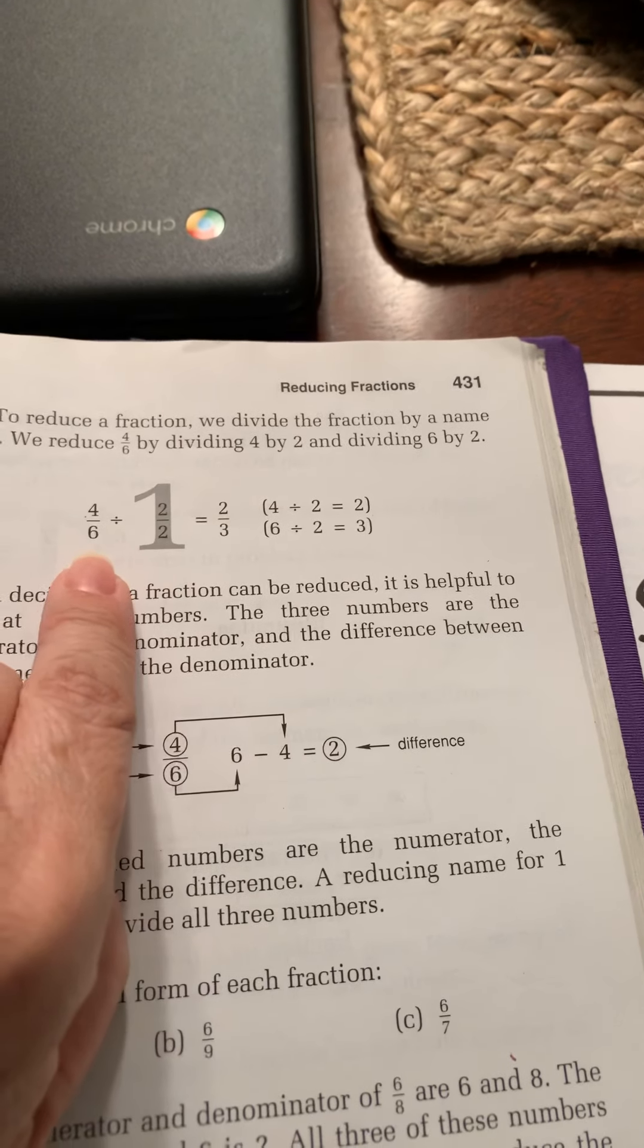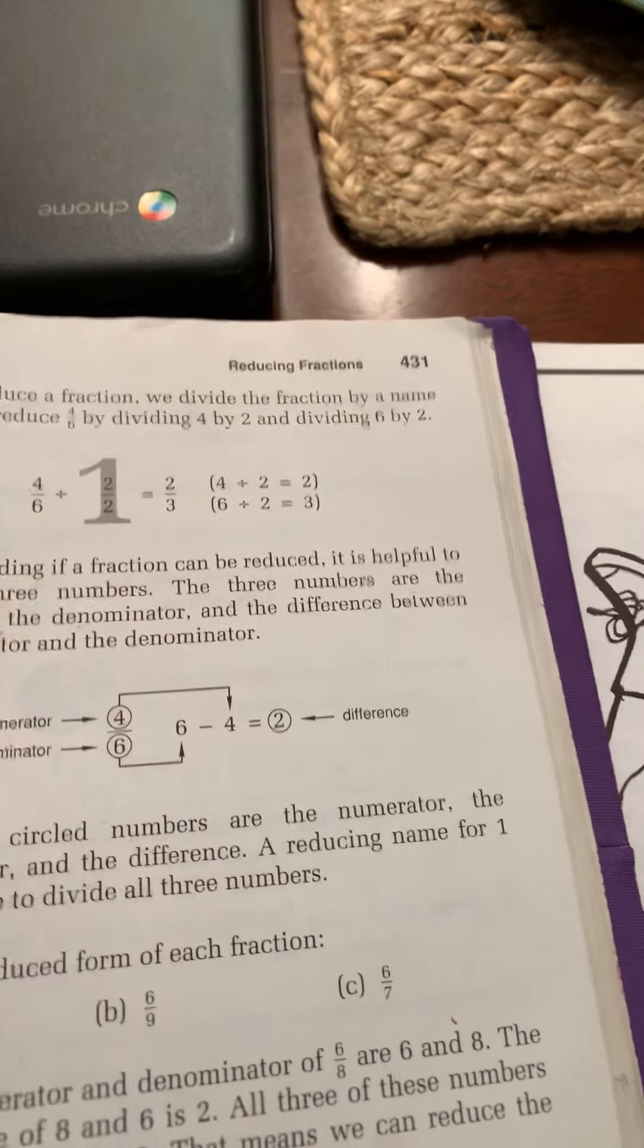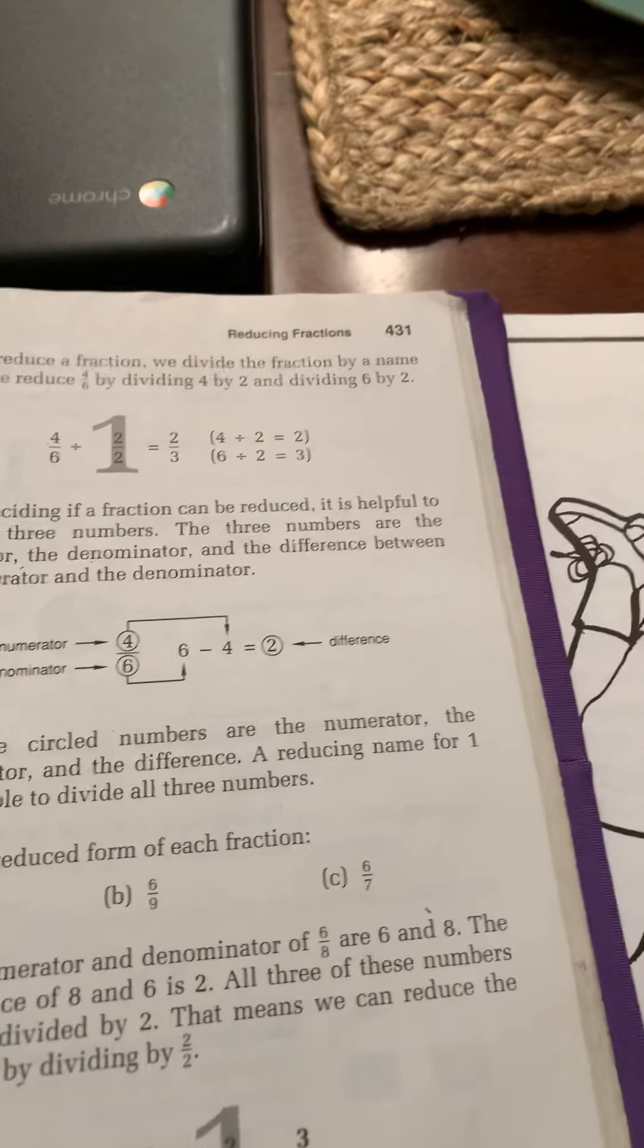So it proves, really, that these are equal, because when you divide by one, you're going to get the same thing. In this case, we just made it two halves instead of one.